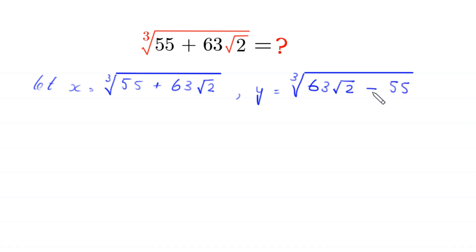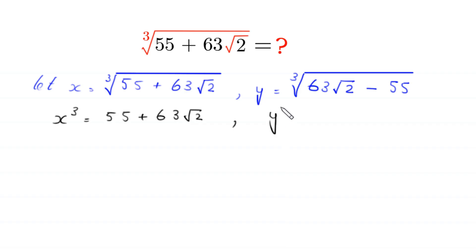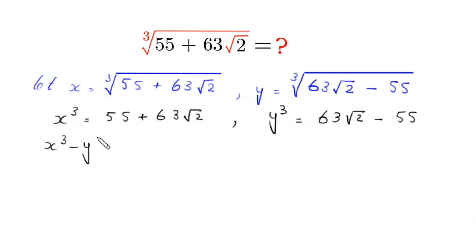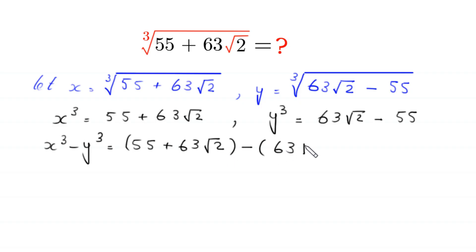If we take a cube of both sides, x³ = 55 + 63√2. Similarly, taking the cube of the y equation gives y³ = 63√2 − 55. Subtracting the second equation from the first, we get x³ − y³ = (55 + 63√2) − (63√2 − 55).